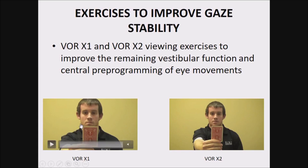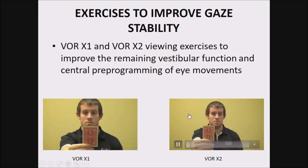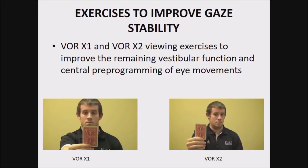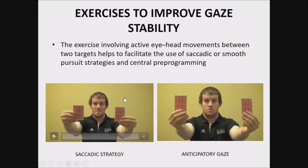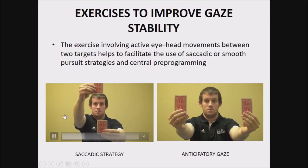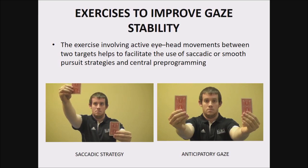That is VOR x1. In VOR x2, the card also moves as the head moves, but the eye concentrates on a particular letter or diagram on the card. It is again performed in both horizontal and vertical directions. These are the basic first two exercises. The next is to accelerate compensation through saccadic or smooth pursuit strategies. In the saccadic strategy, the patient uses two cards and saccadic movements to look alternately at both cards, in horizontal, vertical, and oblique directions.